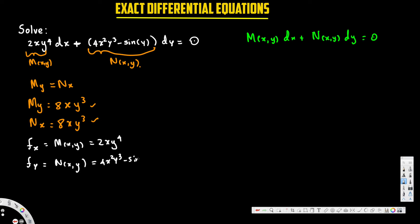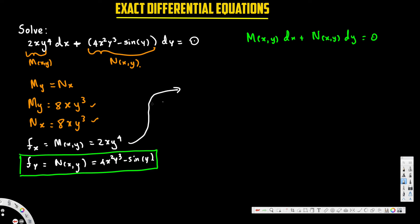The next step is to keep one of these equations and integrate. I'm going to integrate the first one with respect to x. This is a partial integration — the main purpose is to find the function f(x,y). Treating y as a constant, we integrate 2xy⁴ with respect to x, writing it as 2y⁴ times the integral of x dx.